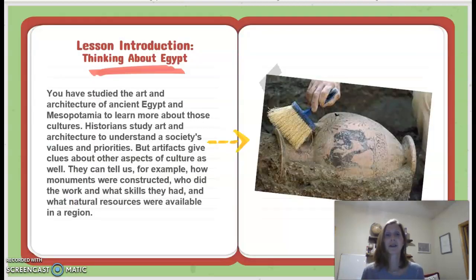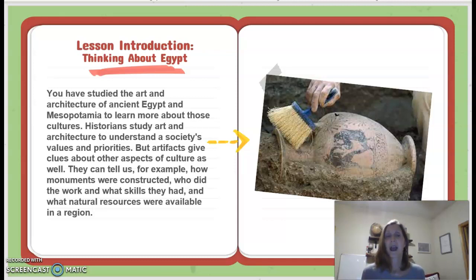Lesson introduction: Thinking about Egypt. You have studied the art and architecture of ancient Egypt and Mesopotamia to learn more about those cultures. Historians study art and architecture to understand a society's values and priorities. But artifacts give clues about other aspects of culture as well — how monuments were constructed, who did the work and what skills they had, and what natural resources were available in a region.